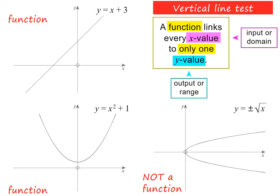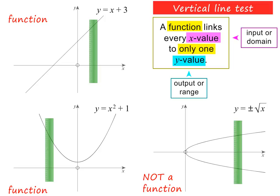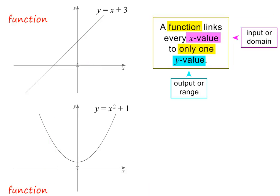To quickly check whether a graph represents a function or not, we can use what is called the vertical line test. To do this, we can use a vertical ruler and move it across the graph from left to right. If the ruler at any time cuts the graph more than once, then we can immediately say that it is not a function. The ruler clearly cuts the parabola on its side more than once — this is why it is not a function. The other two graphs are functions because they both pass the vertical line test.